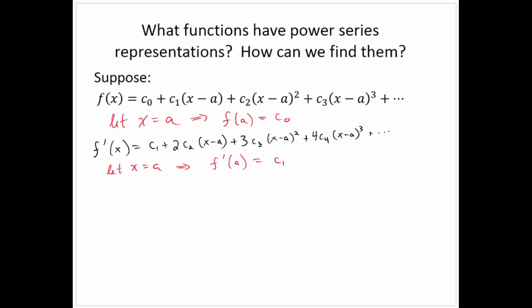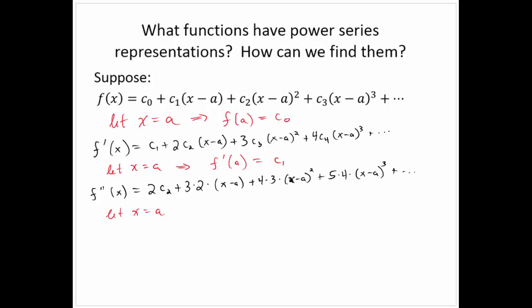Differentiating again, f″(x) = 2c₂ + 3·2·(x−a) + 4·3·(x−a)² + 5·4·(x−a)³ + … Letting x equal a, this implies f″(a) = 2c₂.